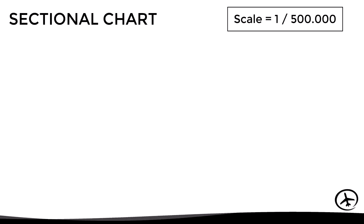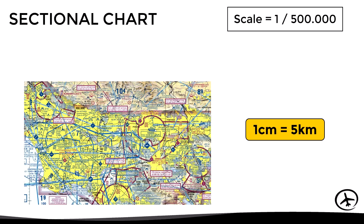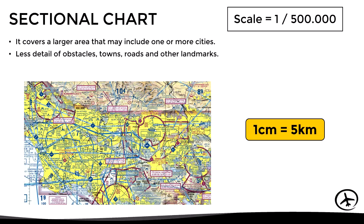Let's now move on to the sectional chart, which has a scale of 1 in 500,000. This means that each centimeter measured on the chart equals 5 kilometers. Now, since here the scale is smaller compared to a terminal chart, it will cover a larger area that may include one or more cities. However, since the scale is smaller, this also means that there will be less detail of obstacles, towns, roads, and other landmarks, and therefore it provides only the most relevant information of the area and airspaces.